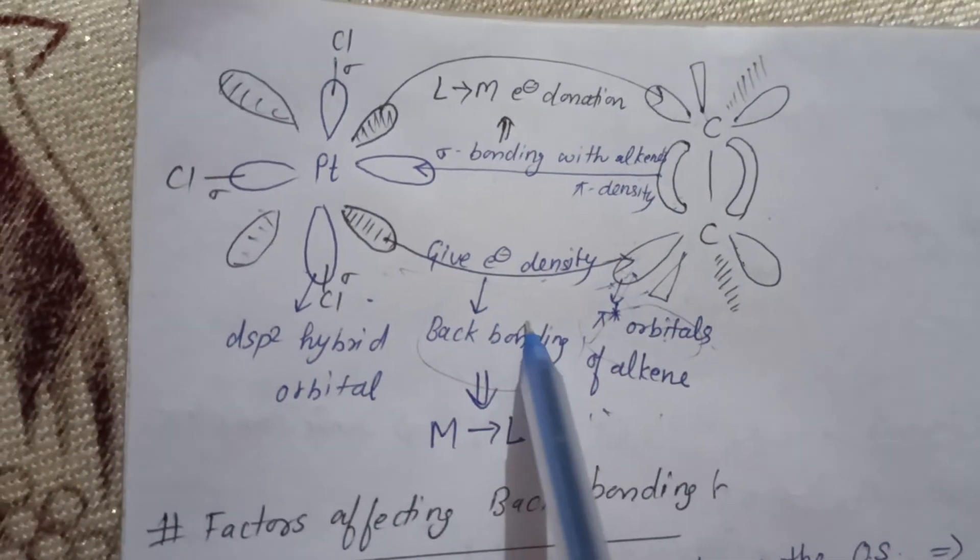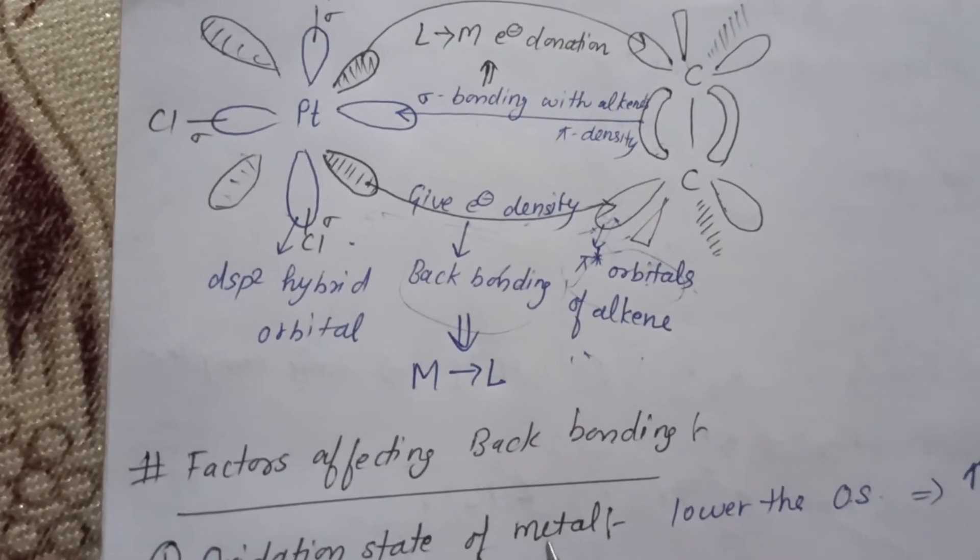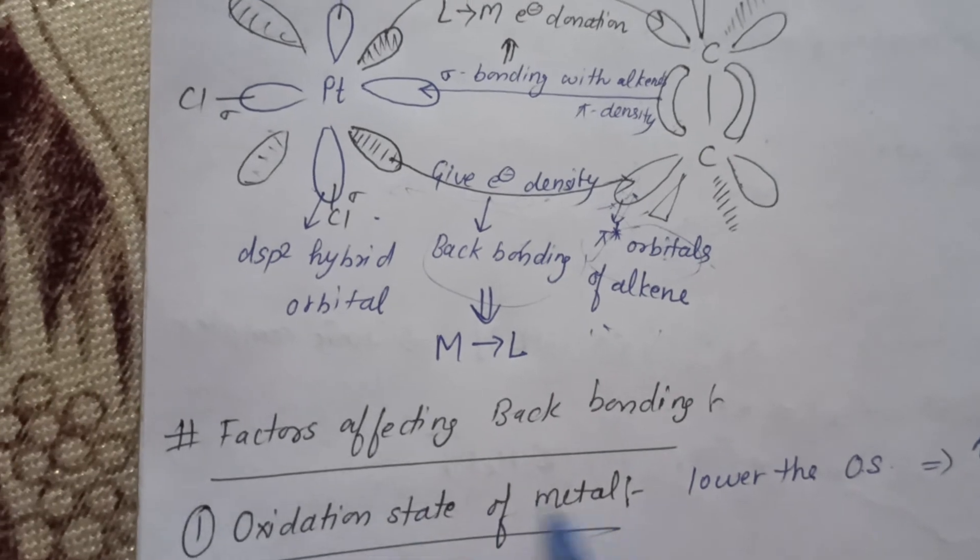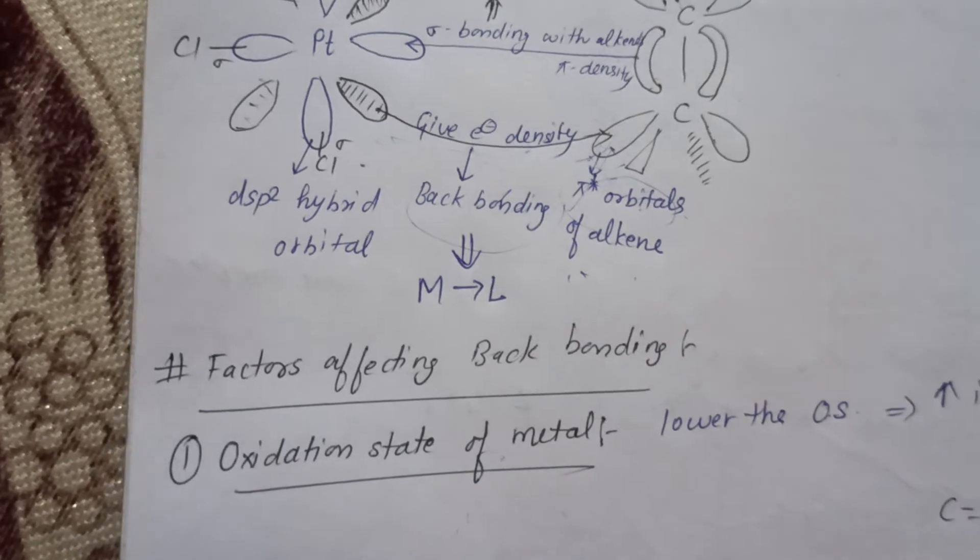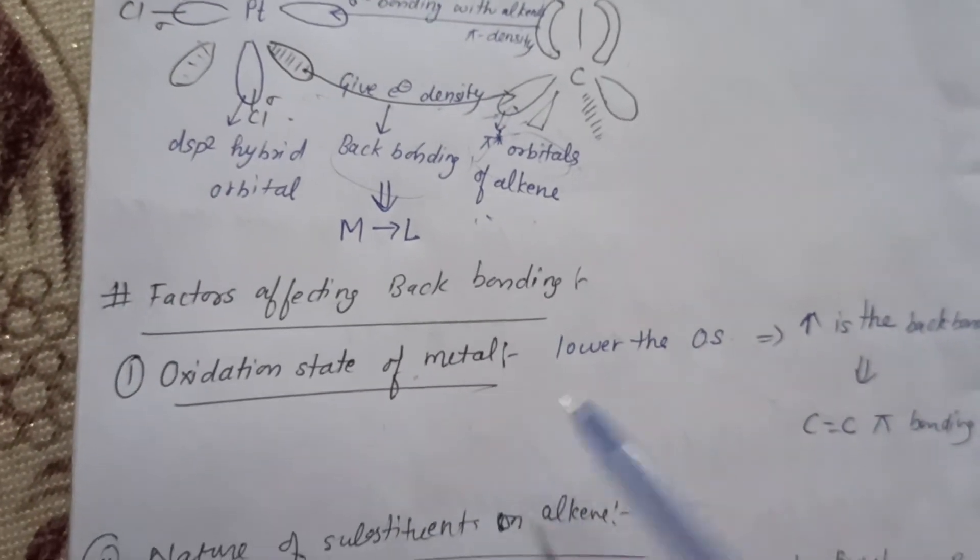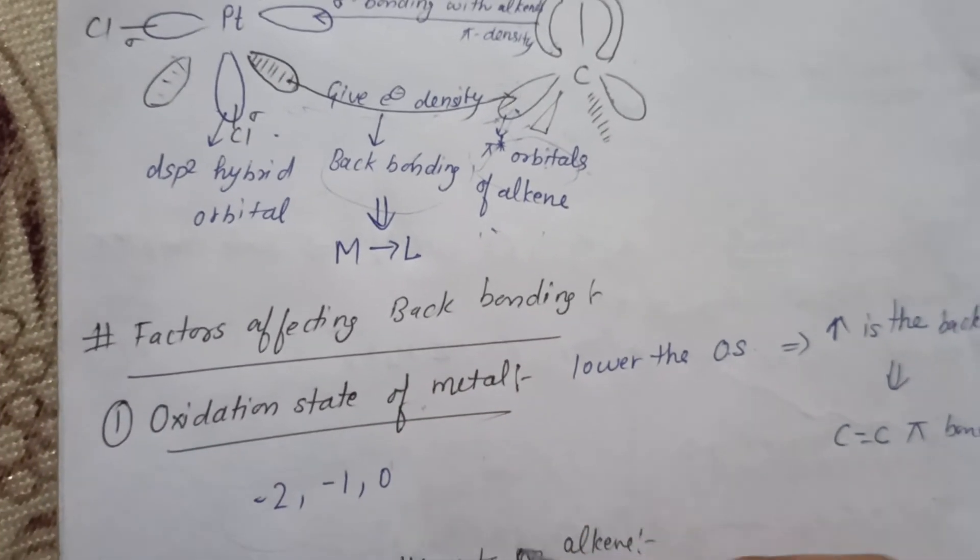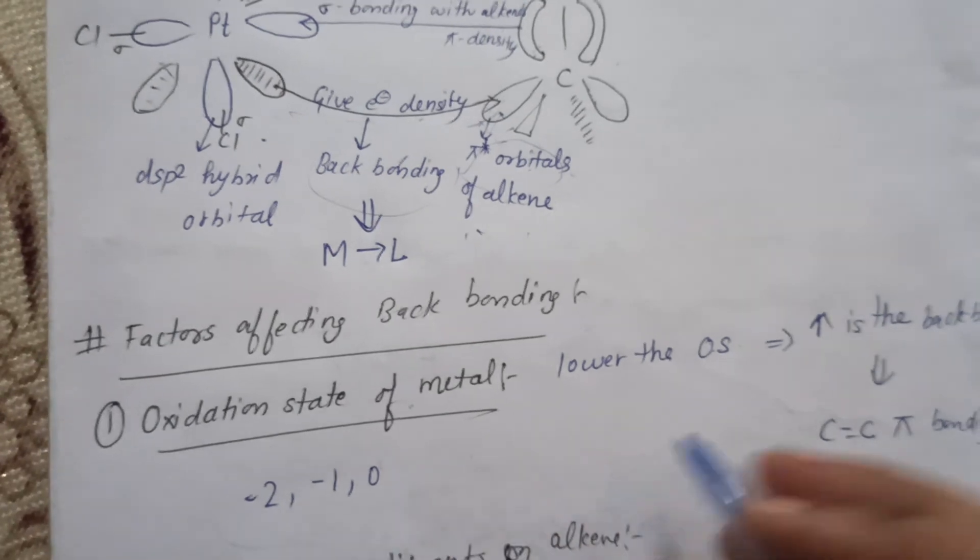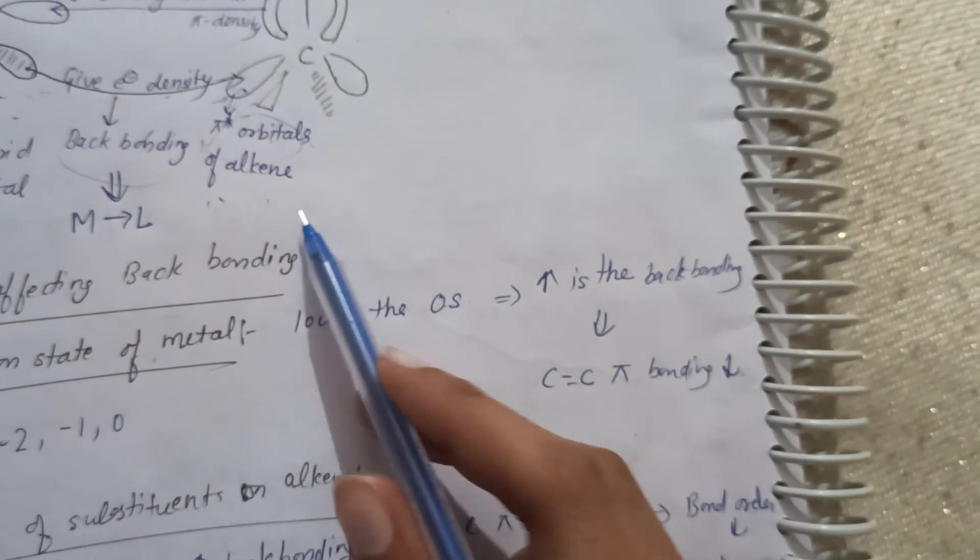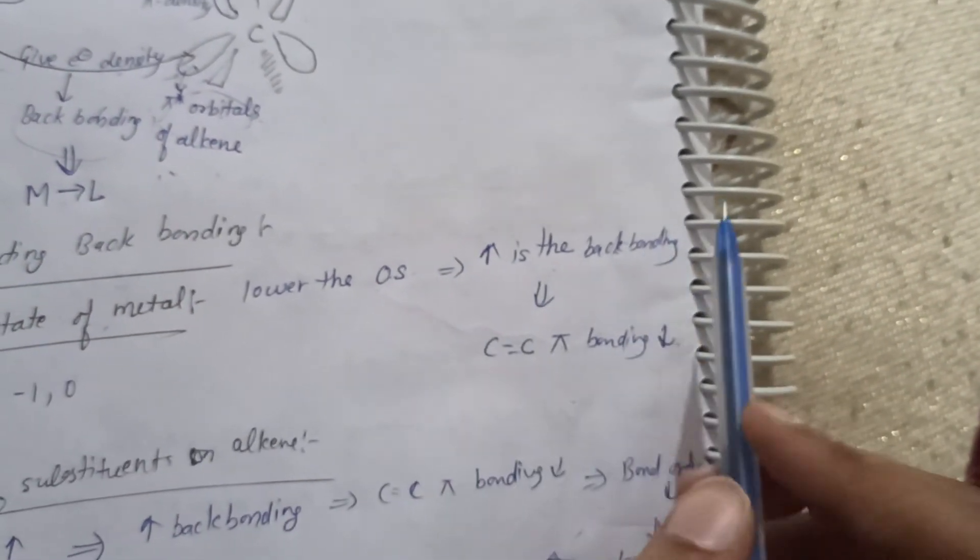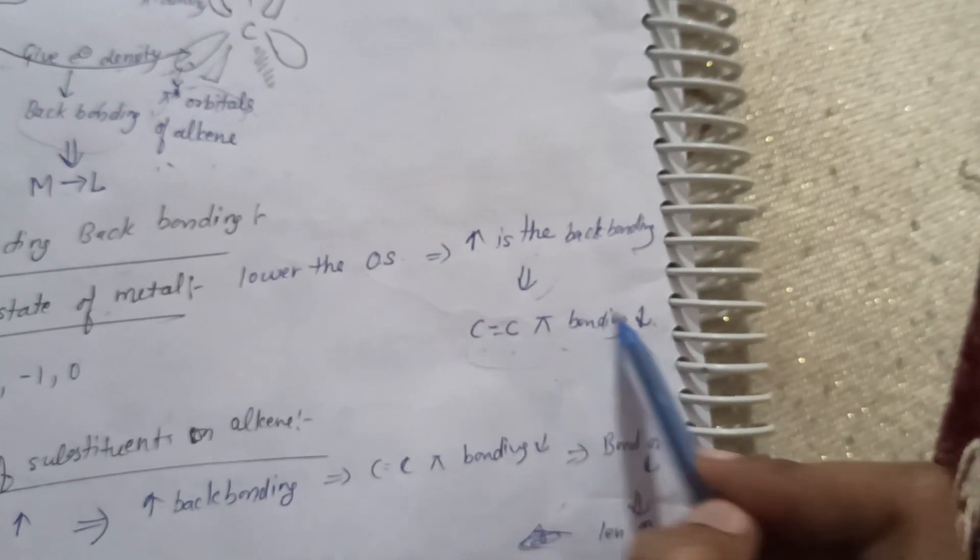I really hope you all understand this structure. We have factors that affect backbonding. Factors are oxidation state of metal. The oxidation state of metal is +2, like we have -2, -1, 0. The lower oxidation state of metal increases the backbonding. This is the backbonding increase. This is the carbon double bond, pi bonding decrease.